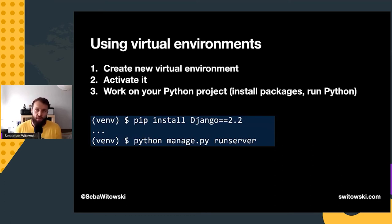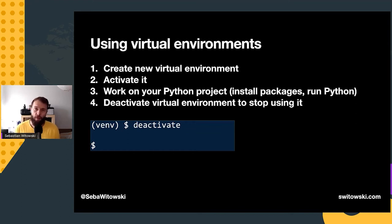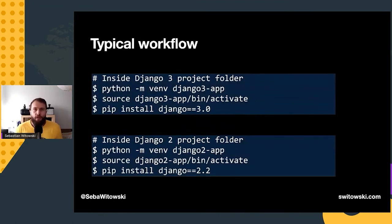Once you activate the virtual environment, you should see a difference in your prompt — in parentheses you'll see the name of the current virtual environment, such as `(venv)`. That means the virtual environment is active. Now if you install a Python package with pip, it will be installed inside this virtual environment. If you run a Python script, it will have access to packages from this virtual environment. To stop using the virtual environment, run `deactivate`, which reverts all the changes that the activate command made, returning you to the global Python and global pip packages.